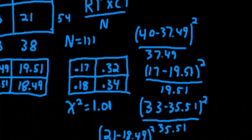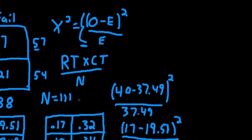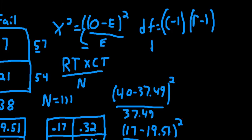I get 1.01. Our degrees of freedom for this test are the number of columns minus 1 times the number of rows minus 1. So that's simply 1 times 1. So our degrees of freedom for this test are 1.